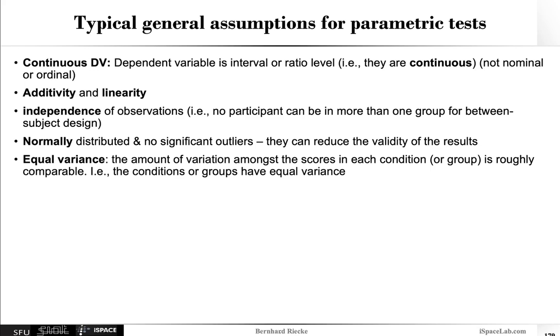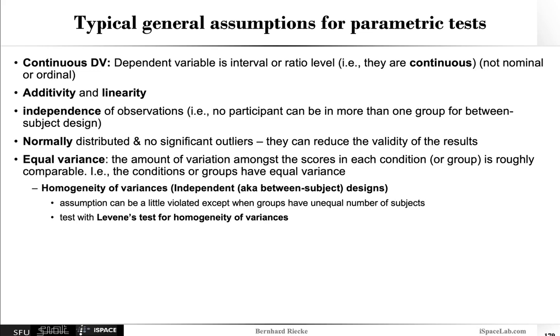Now how that looks like depends a bit whether you run a between or within subject design. So for independent or between subject designs, it's really about the homogeneity of variances. So these assumptions can be a little violated, except when the groups have an unequal number of subjects. That's when ANOVAs and other tests aren't as flexible or robust against violations of the homogeneity of variance assumption. You can test for that with Levene's test for the homogeneity of variances.